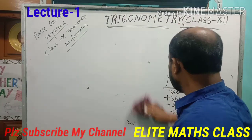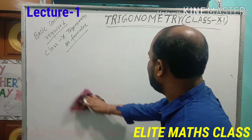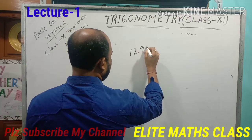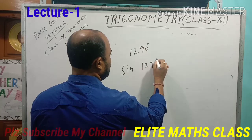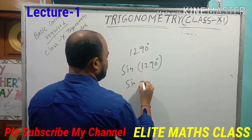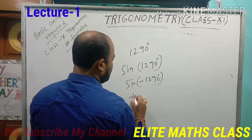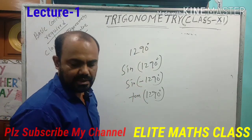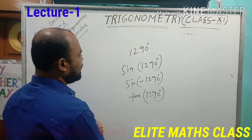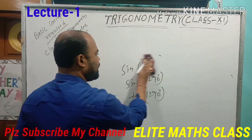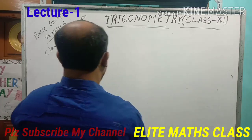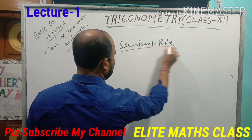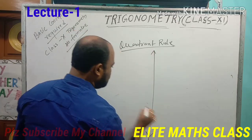As there are 6 trigonometrical ratios, what will be the values of the trigonometrical ratios for large angles? For example, if the angle is 1290 degrees, what will be the value of sin(1290°)? Or what will be the value of sin(−1290°)? Or what will be the value of tan(1290°)? This is the problem. How to find the values of these angles? This is called the quadrant rule.